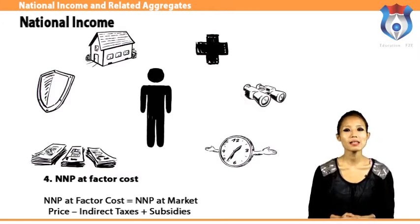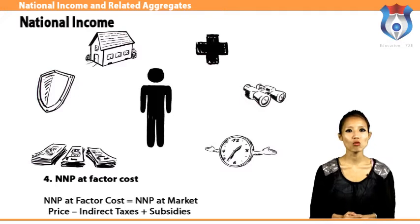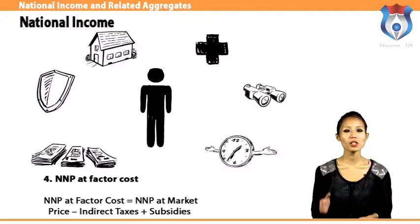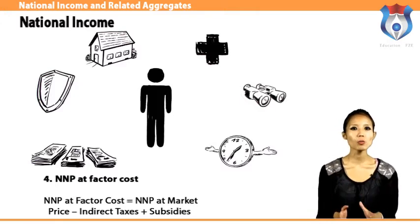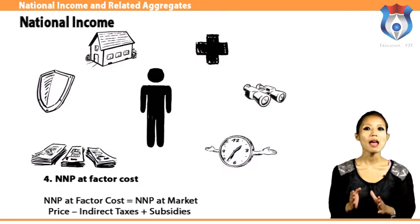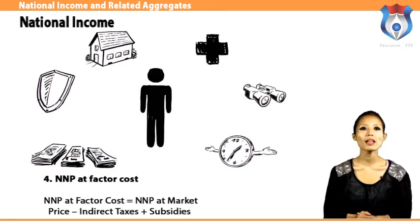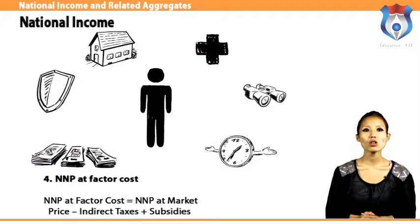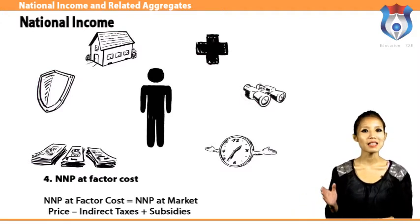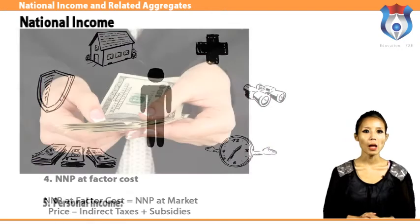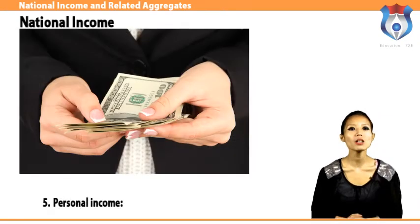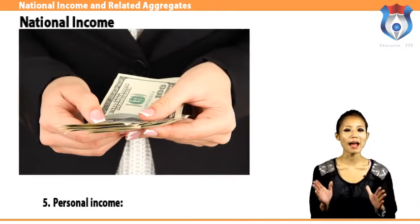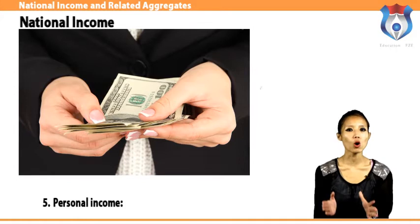NNP at factor cost, or national income, is the sum of wages, rent, interest, and profits paid to factors for their contribution to the production of goods and services in a year. NNP at factor cost equals NNP at market price minus indirect taxes plus subsidies.